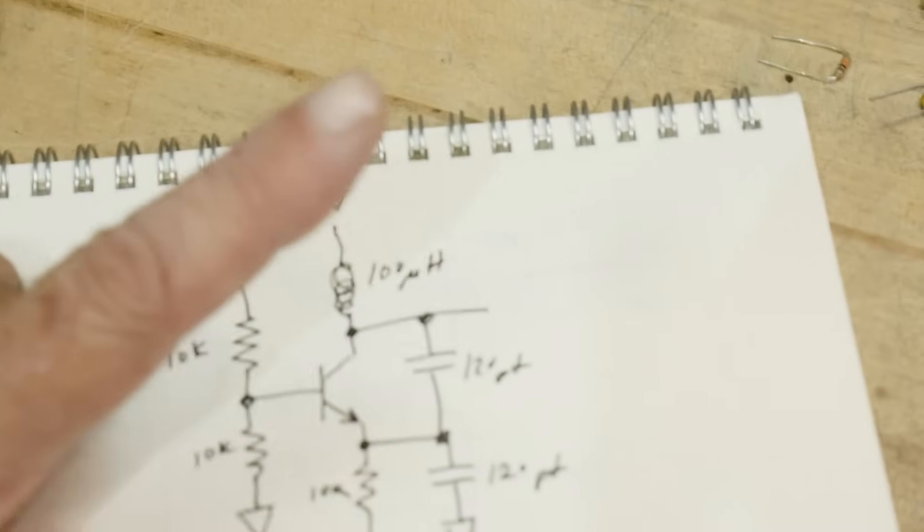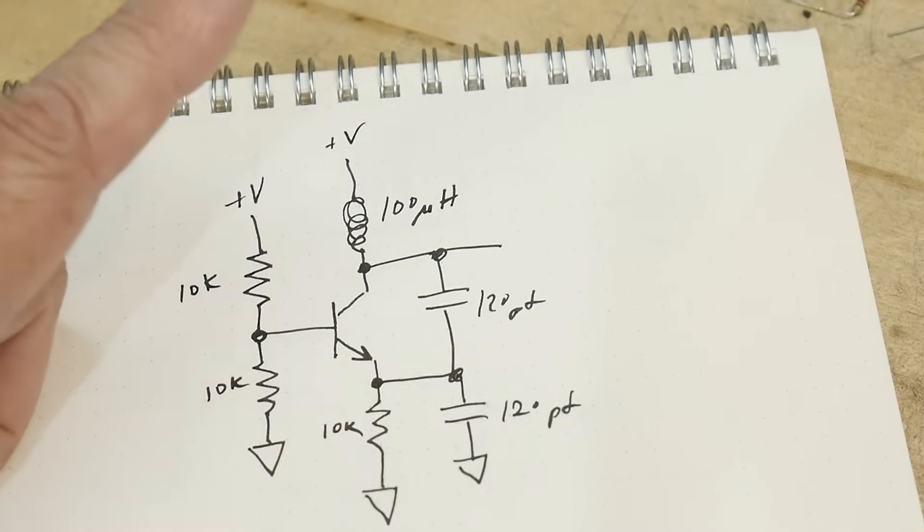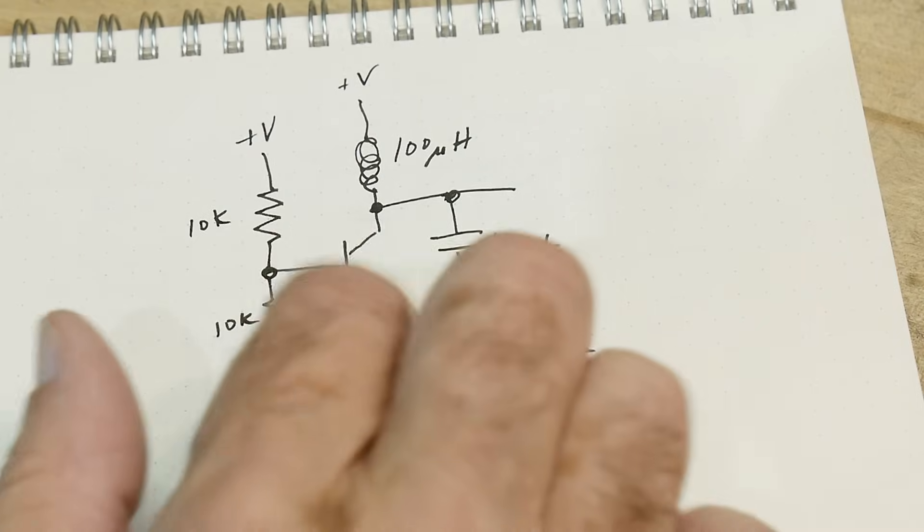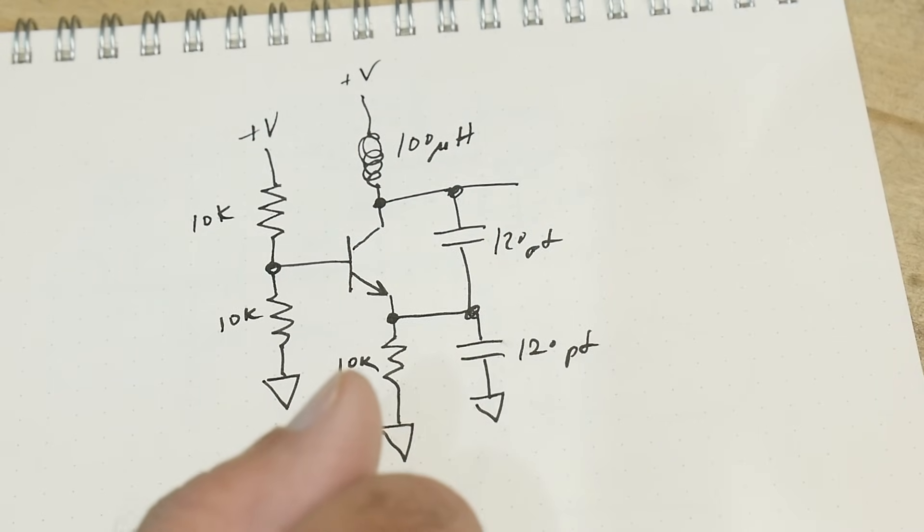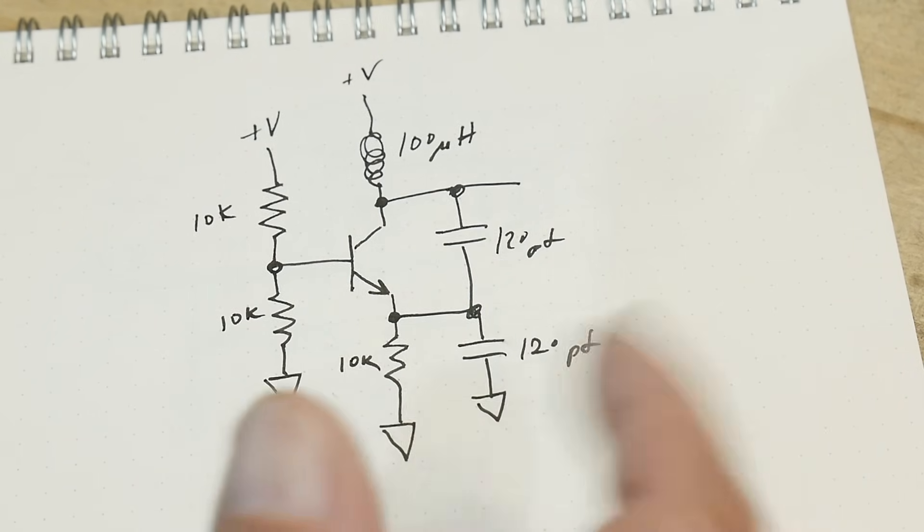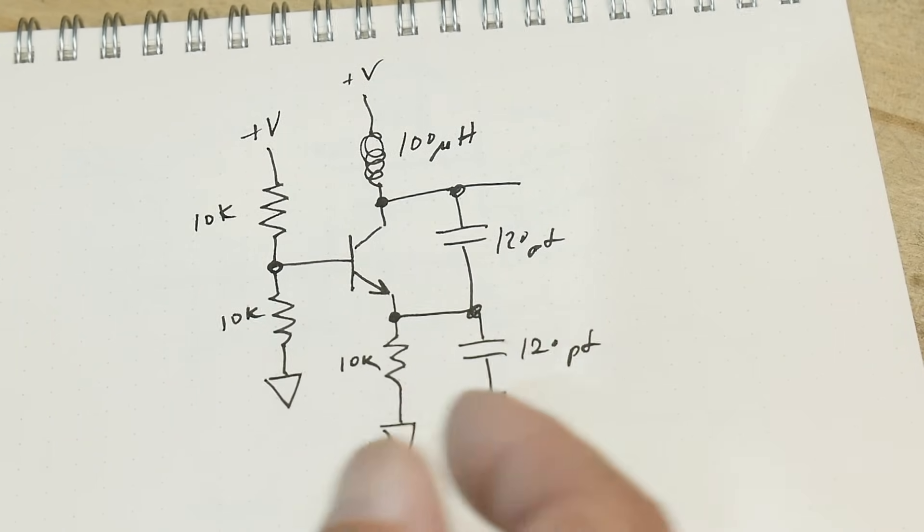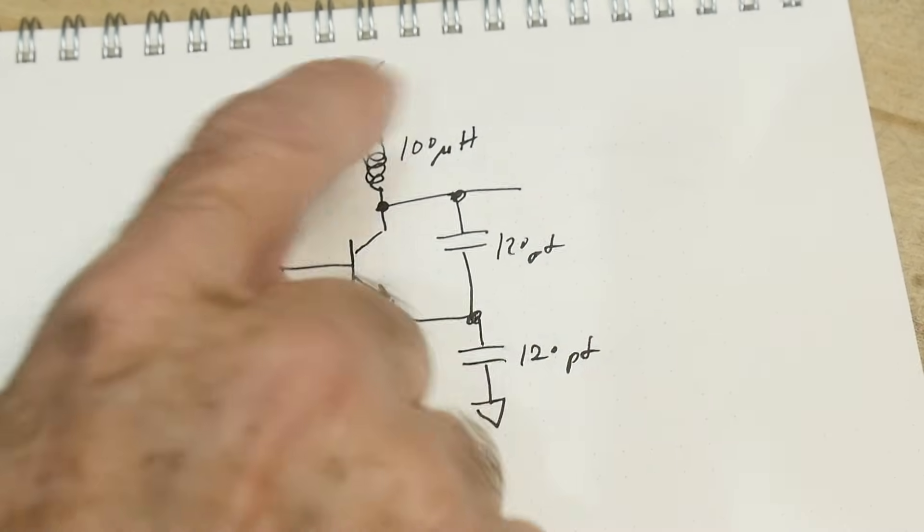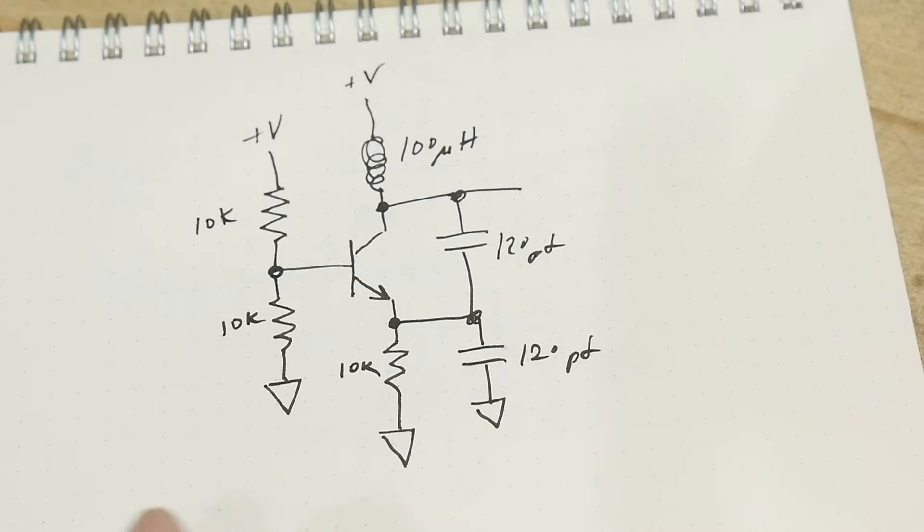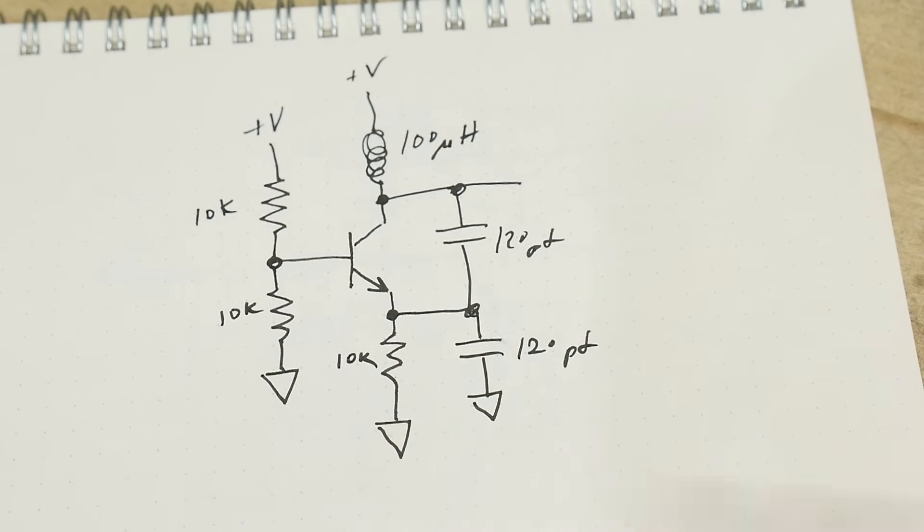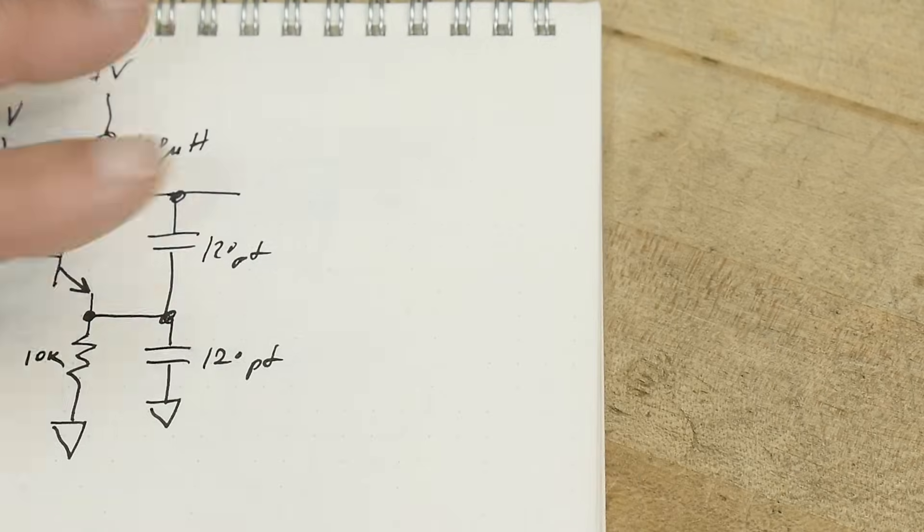The oscillation frequency is dependent on these two values here. If you read the literature it would say that it's actually the parallel combination of those two, but that's not what I measure. In order to get the 1.6 megahertz you need to have about a total capacitance of 100 picofarads if you have 100 microhenries. 100 microhenries plus 120 picofarads will give you about the right amount.